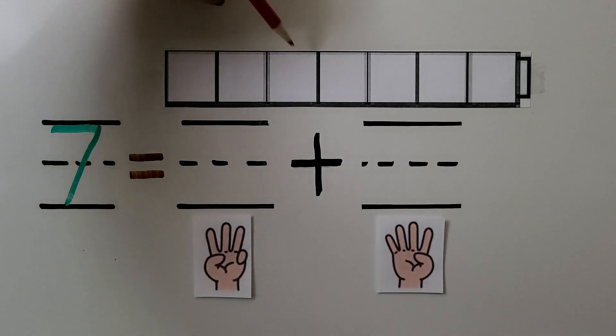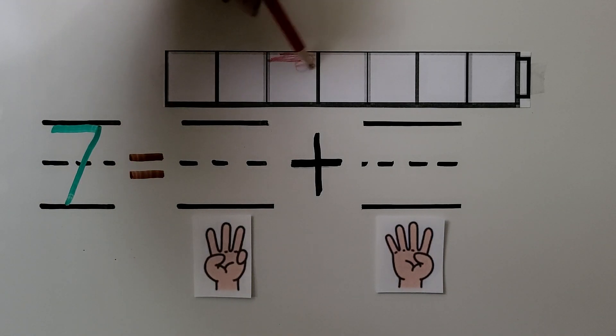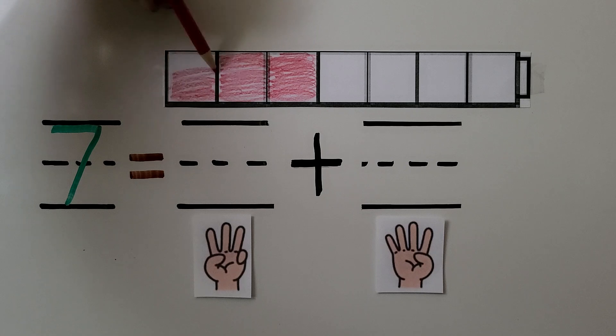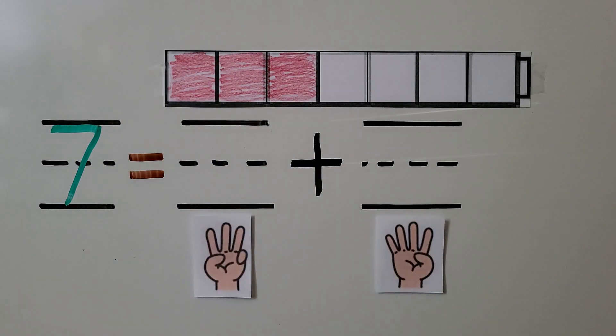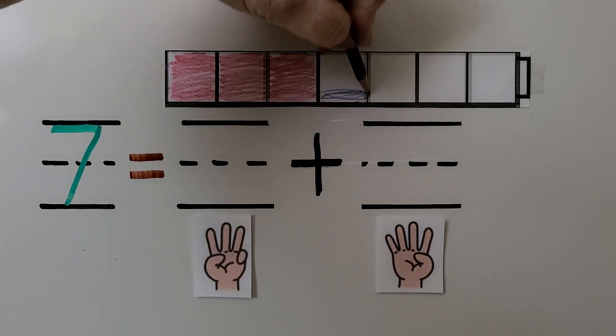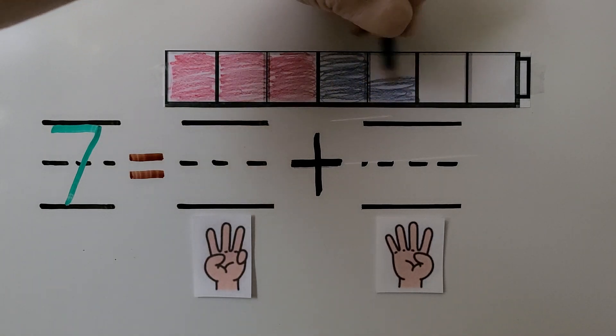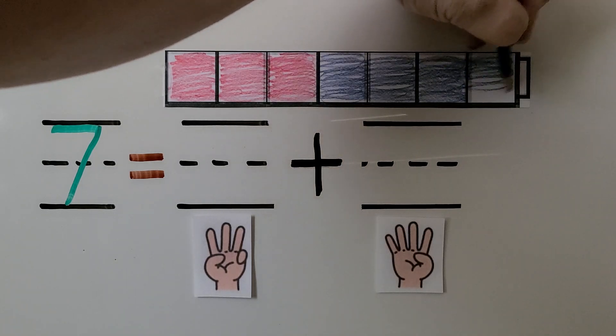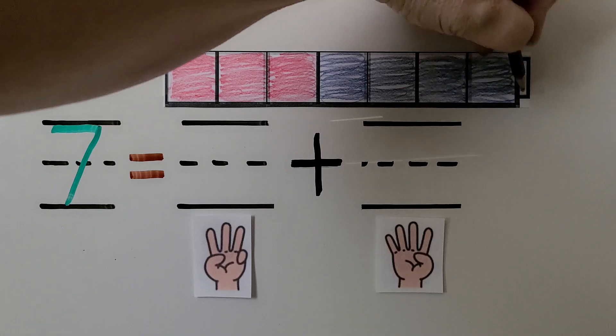We can color 3 of the cubes red: 1, 2, 3, 4, 5, 6, 7. And we can color the rest blue: 1, 2, 3, 4. We have to remember to color this little piece.